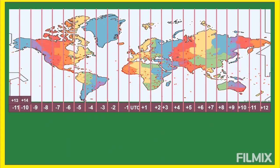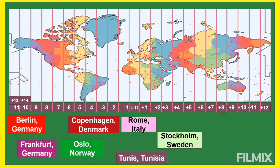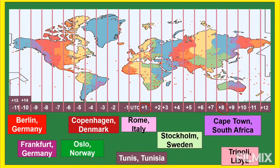Next are countries and places at GMT+1, meaning they are one hour ahead of UTC. Comparing to Philippine time — the Philippines is at GMT+8 and these places are at GMT+1 — the Philippines is seven hours ahead on standard time, or six hours ahead when these countries observe Daylight Saving Time. These places include Berlin (Germany), Frankfurt (Germany), Copenhagen (Denmark), Oslo (Norway), Rome (Italy), Stockholm (Sweden), Tunis (Tunisia), Cape Town (South Africa), and Tripoli (Libya), plus other countries I didn't mention.